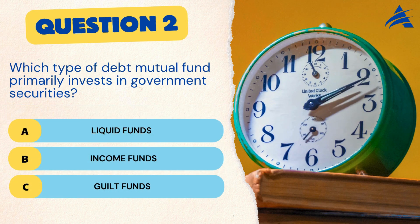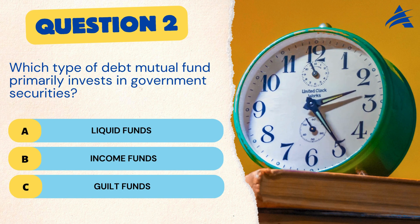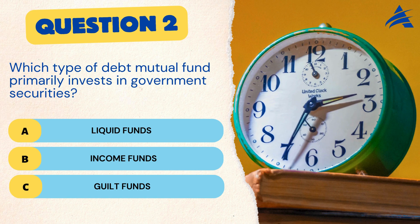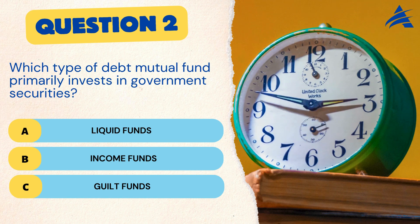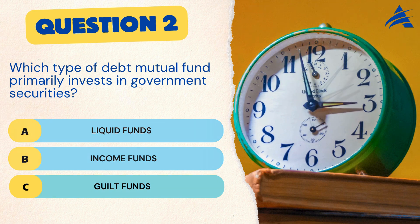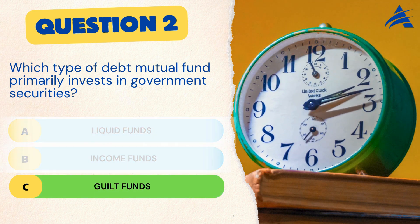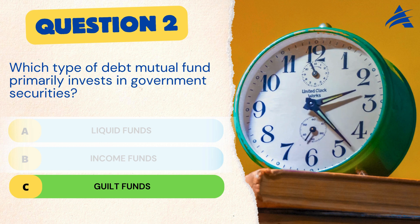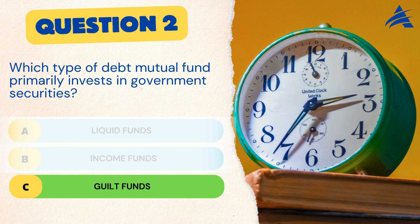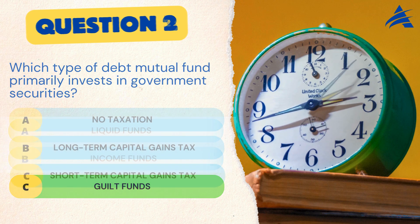Question 2. Which type of debt mutual fund primarily invests in government securities? A. Liquid funds. B. Income funds. C. Gilt funds. The correct answer is C. Gilt funds. Gilt funds offer investors exposure to government securities, providing a safe haven investment option with potentially lower risk.